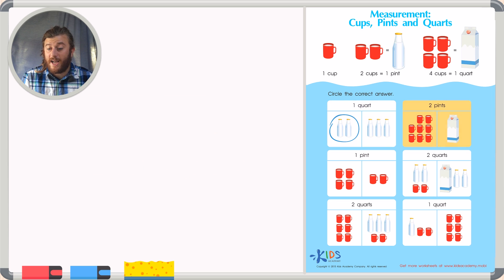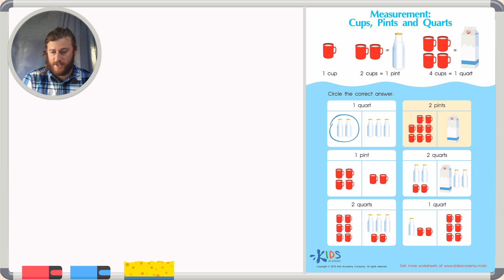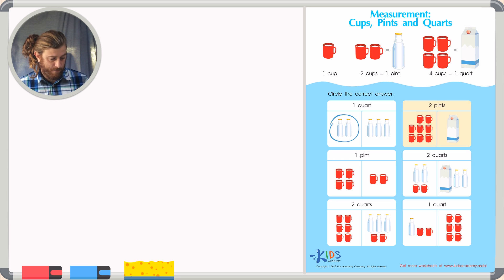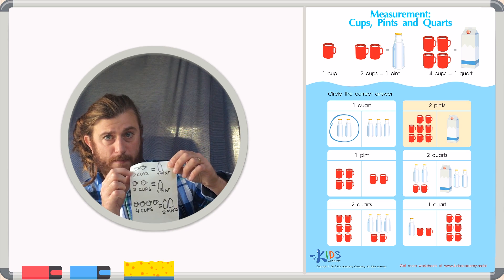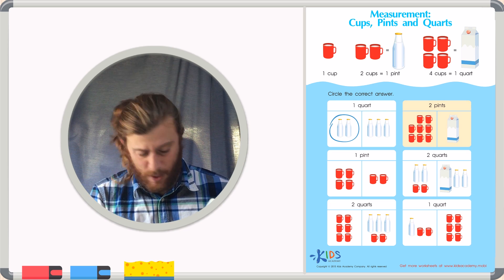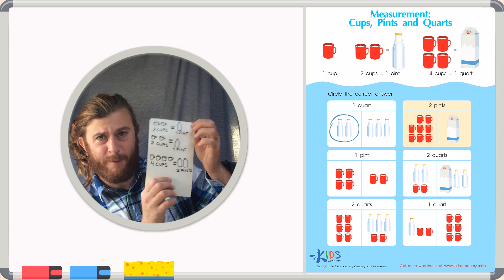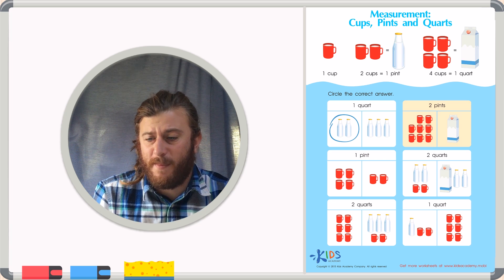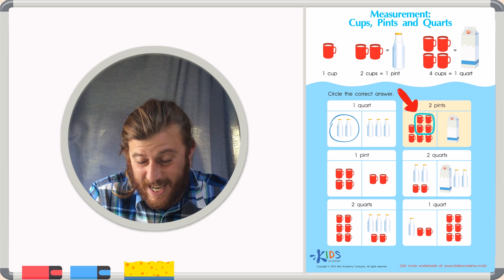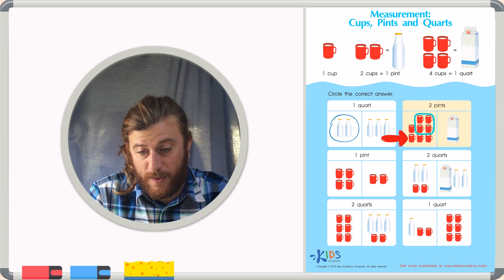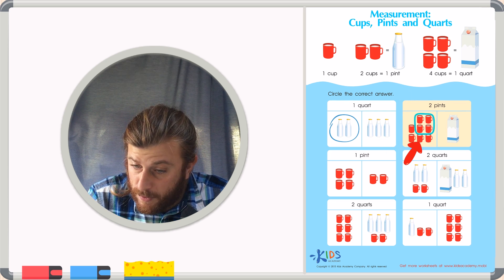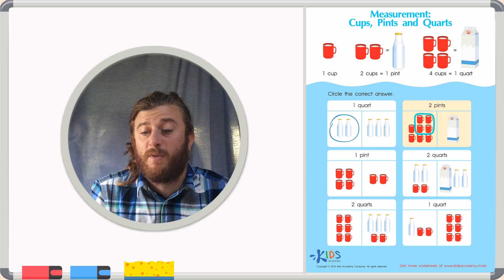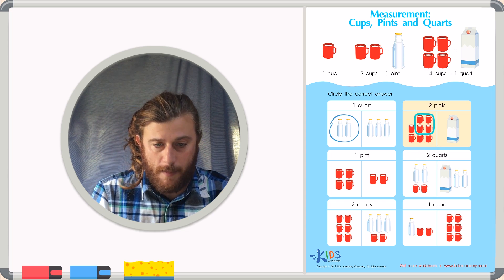Let's take a look at our next question. They want to know which picture best represents two pints. Well, I know that in one pint, there are two cups. And that in two pints, there are four cups. So if I look at my first picture and I circle four cups, I see that there are one, two, three, four leftover cups. So it cannot be the picture with the cups.